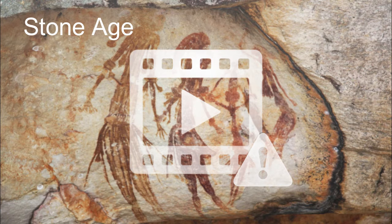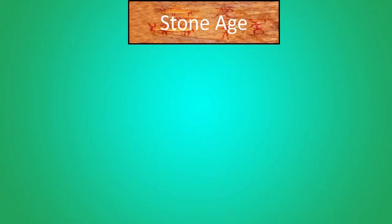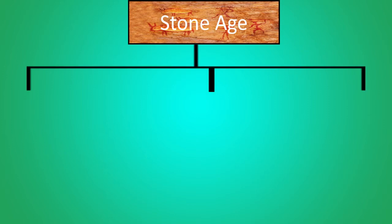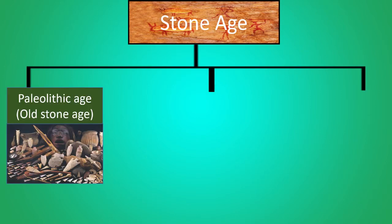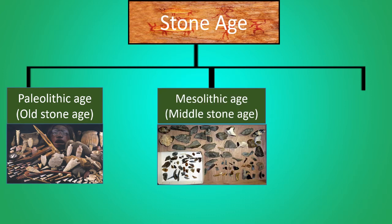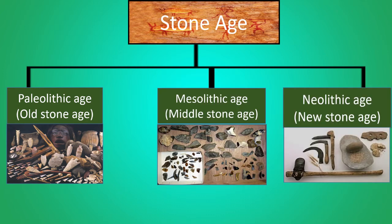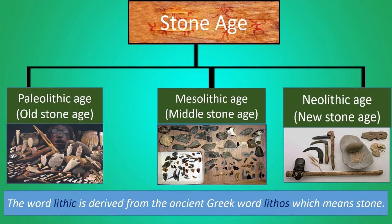The age of human beings became more advanced beyond stone and organic materials. Stone Age is divided into different periods according to the tools used by humans. The Stone Age is divided into three ages: Paleolithic Age or Old Stone Age, Mesolithic Age or Middle Stone Age, and Neolithic Age or New Stone Age. The word 'lithic' is derived from the ancient word 'lithos' which means stone.